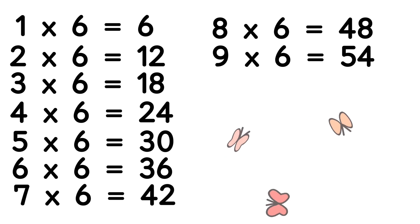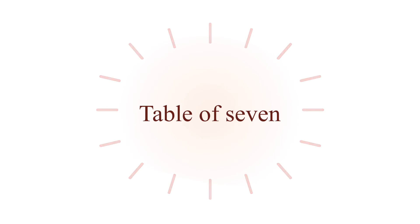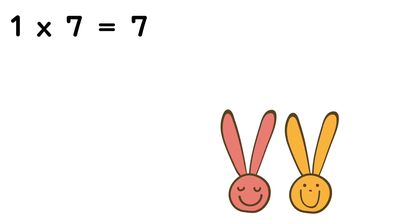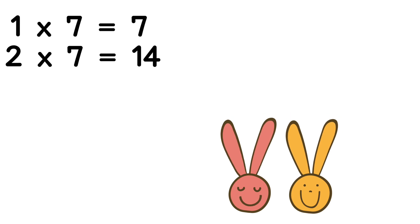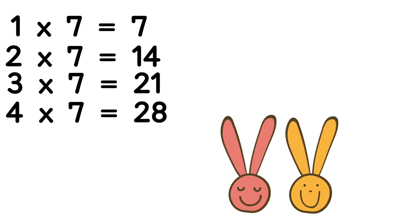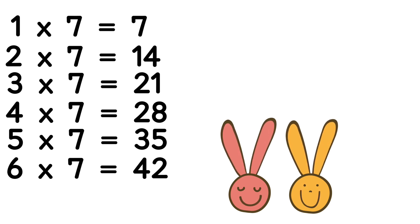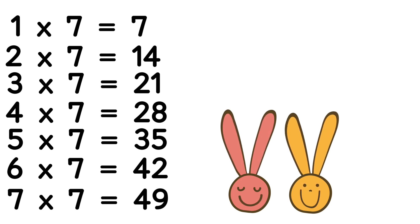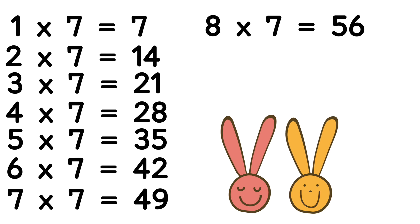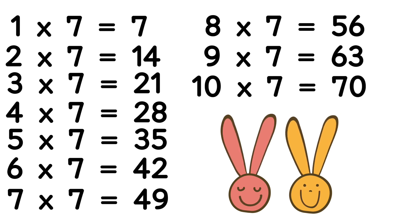9 sixes are 54, 10 sixes are 60. Table of 7: 1 seven is 7, 2 sevens are 14, 3 sevens are 21, 4 sevens are 28, 5 sevens are 35, 6 sevens are 42, 7 sevens are 49, 8 sevens are 56, 9 sevens are 63, 10 sevens are 70.